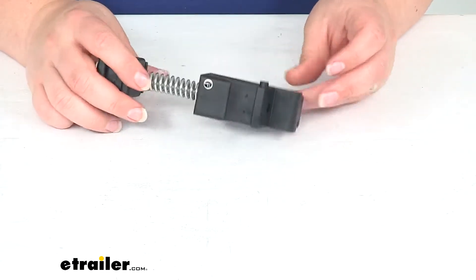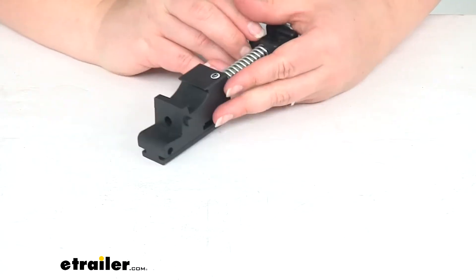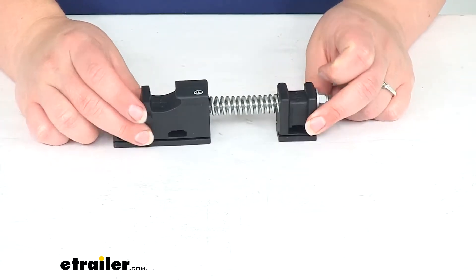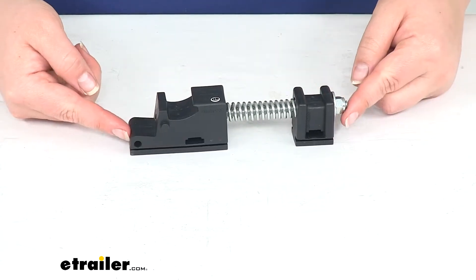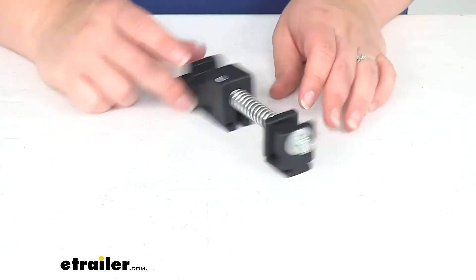It should be pretty simple to uninstall the old one and reinstall this new one. It's going to be exactly like your original. There's no assembly required. This comes just how you see it here, so we don't have to worry about trying to figure out which end goes where.